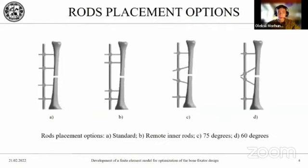Four options for placing the rods of the research model were considered: a standard location, where the internal rods are located at a distance of 40 mm from the fracture zone; a scheme with remote inner rods; a scheme with inner rods located at an angle of 75 degrees to the axis of the bone; and a scheme with inner rods located at an angle of 60 degrees to the axis of the bone.